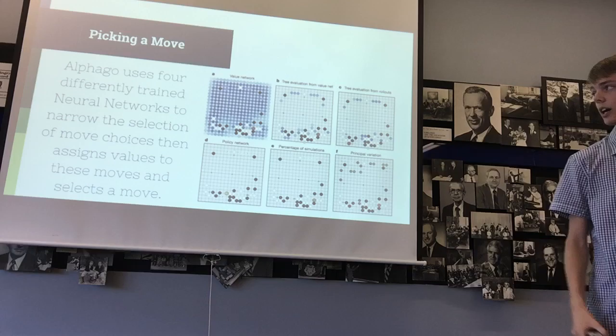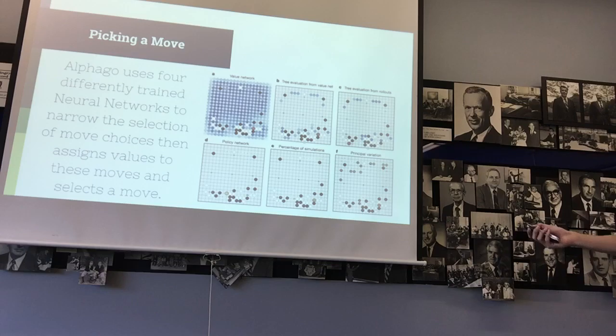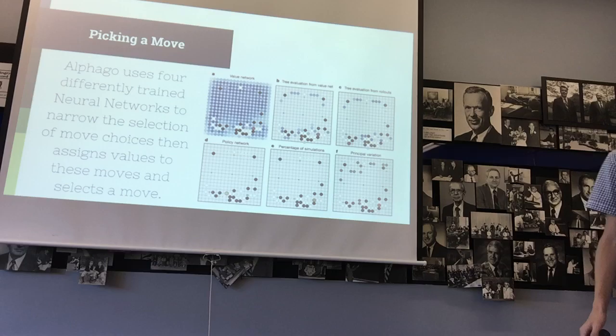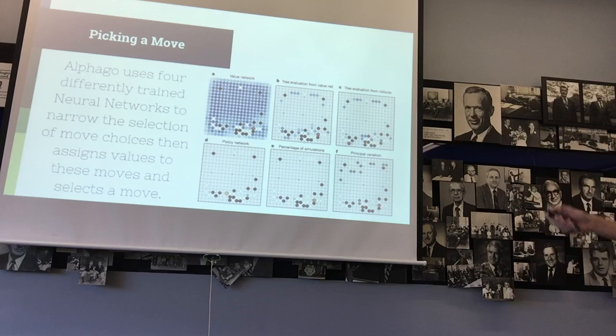So, now I'm just going to combine it all together and go through how AlphaGo picks a move. So you can see here in this figure on A here, all of these little blue circles are spaces where the program could move. And as it goes through, you can see these blue circles are going away.